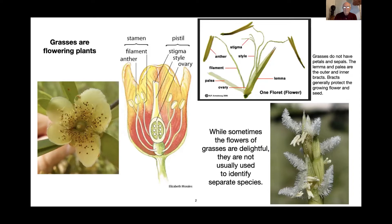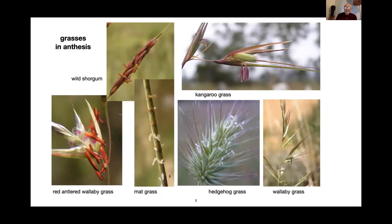When grasses are flowering, we call this anthesis. Here are examples of grasses in flower — you can see the male parts in a lot of them and the male and female parts in others. This is of course an important way to start understanding different types of grasses and how to identify them.